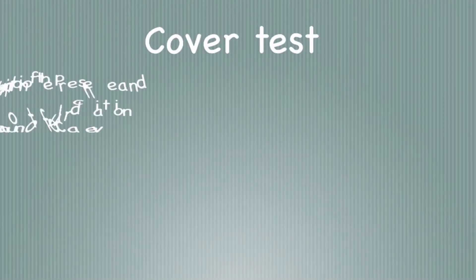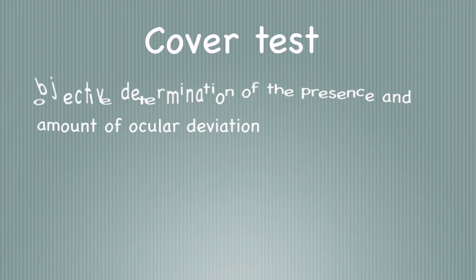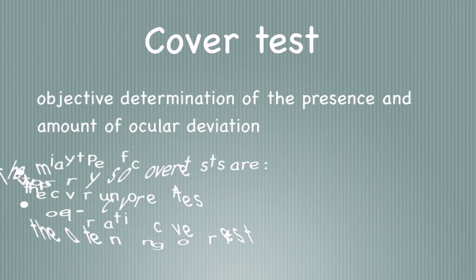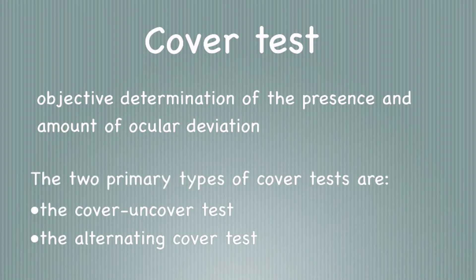A cover test is an objective determination of the presence and amount of ocular deviation. The two primary types of cover tests are the cover-uncover test, which is regarded as an essential examination in investigating strabismus, and the alternating cover test, which is used to detect total deviation.